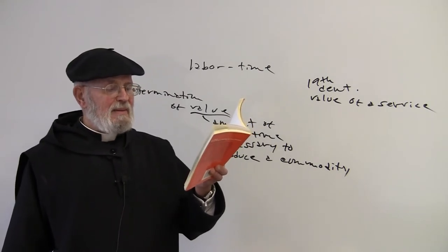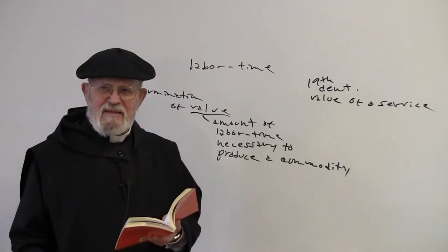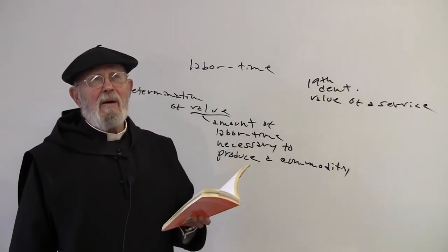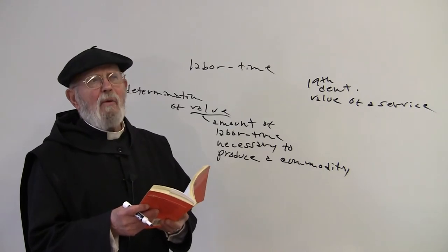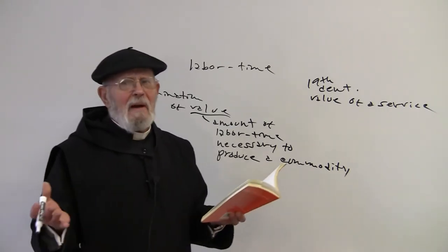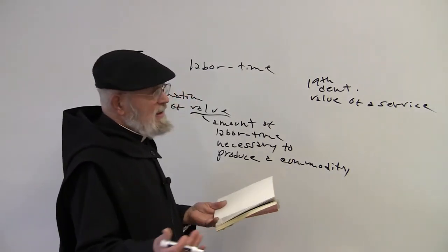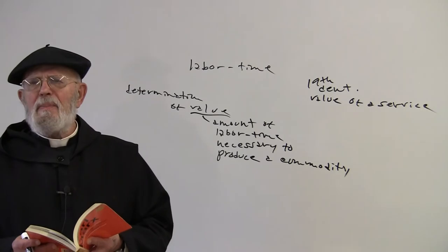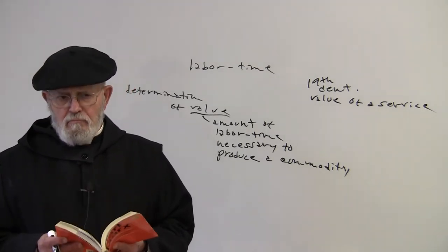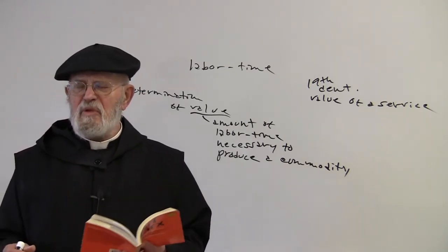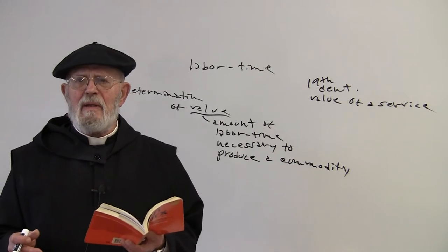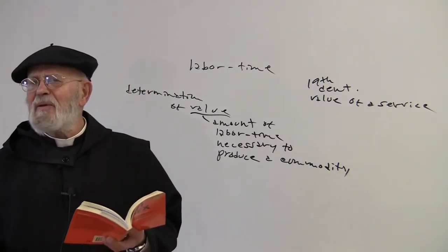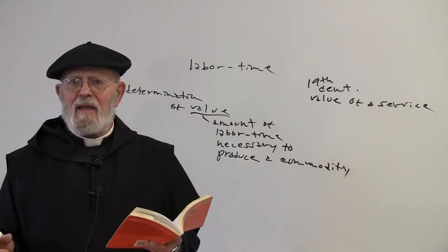So determining the value of services was a problem. Fichte tackled it. The amount of how long you can live off what you produce was a way of determining the value of a service. When I was born, my father took out a burial policy. He dutifully paid in every year into this policy for one thousand dollars. Well, that was some years back, and today I don't think you could get, you can't even get cremated for a thousand dollars.